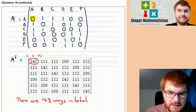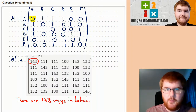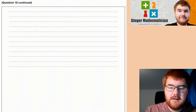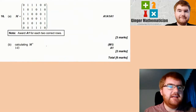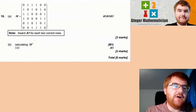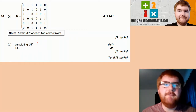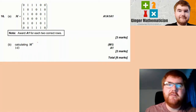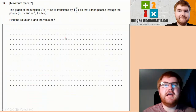Checking the mark scheme — some evidence of calculating M⁶ is what's needed for that method mark.